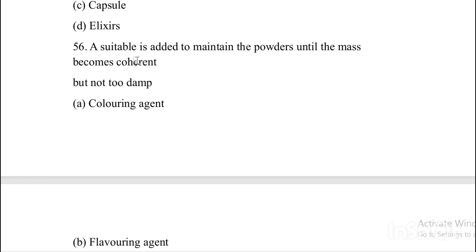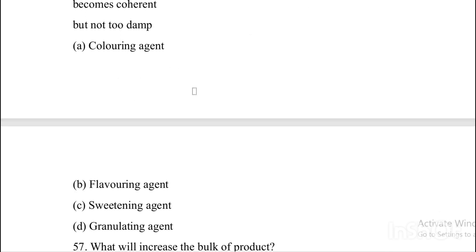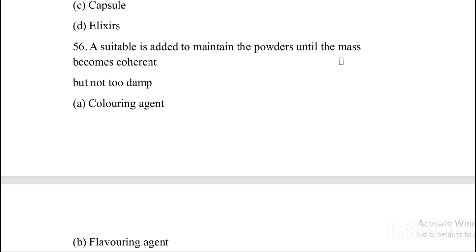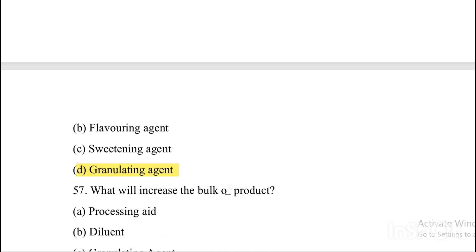Next question. A suitable agent is added to maintain the powder until the mass becomes coherent but not too damp — Option A: Colouring agent. Option B: Flavouring agent. Option C: Sweetening agent. Option D: Granulating agent. Answer is Option D, granulating agent is added to maintain the powder to become coherent.